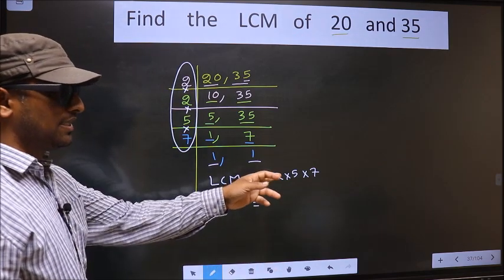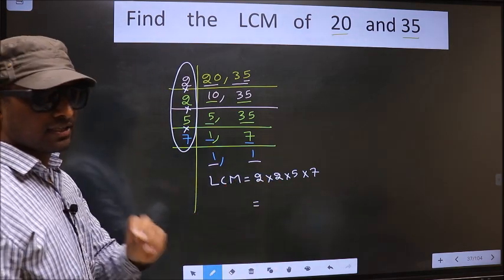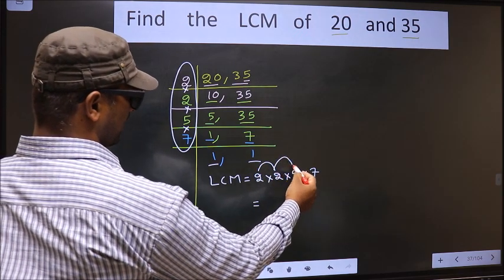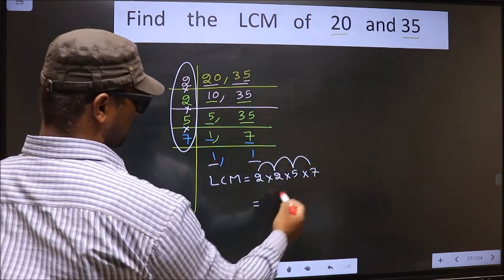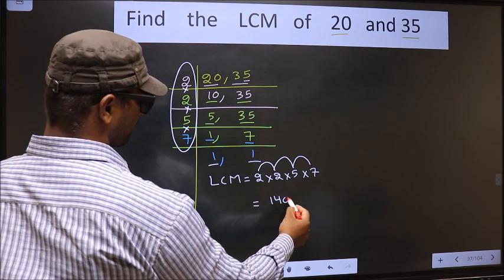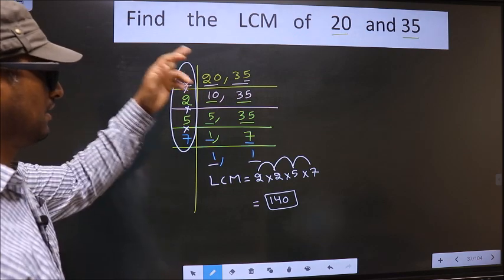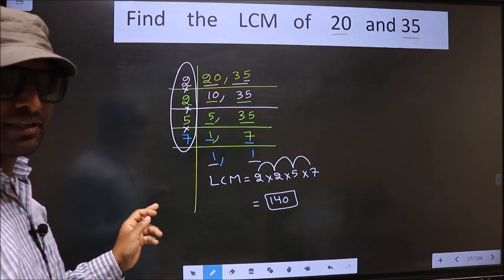Let us multiply these numbers. That is 2 into 2, 4. 4 into 5, 20. 20 into 7, 140. So 140 is our LCM. Am I clear?